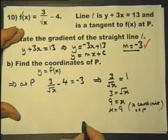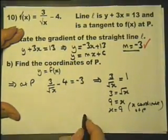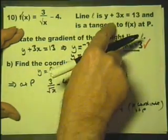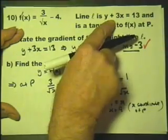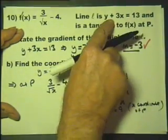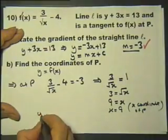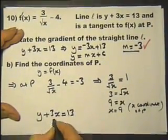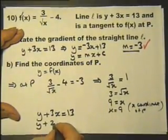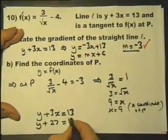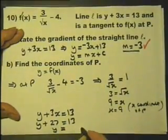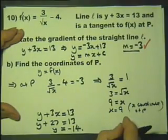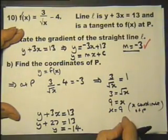We need the y-coordinate now. So we don't know the equation of the curve, but we do know the tangent, and we know this is the x-coordinate we're considering. So if we substitute that value, 3 times 9 is 27. Subtract 27 from both sides, and that will give us -14.